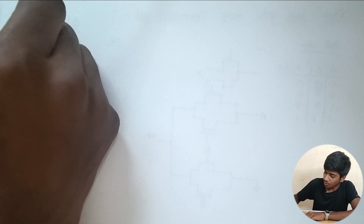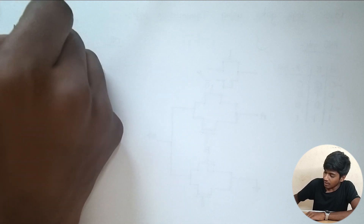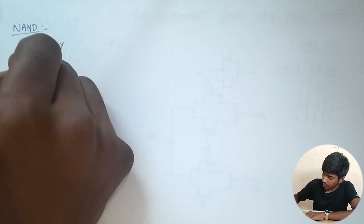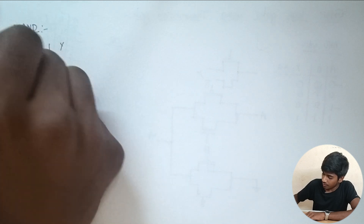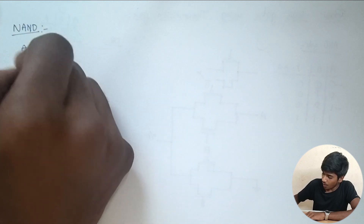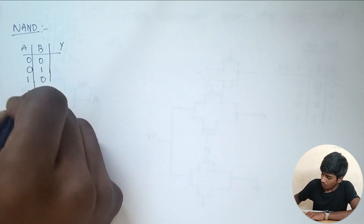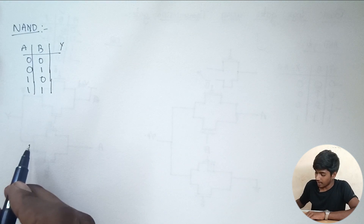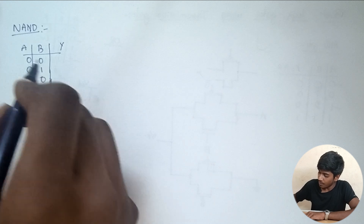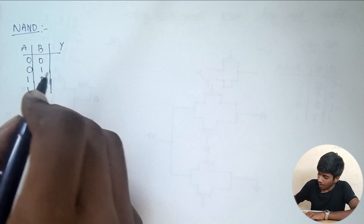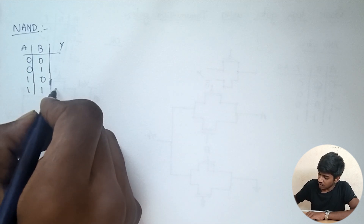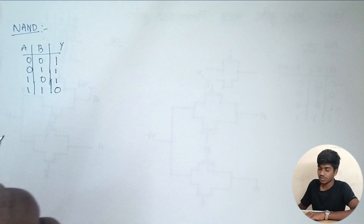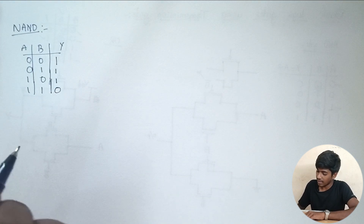Now for NAND and NOR gate, we will implement using transmission gate. NAND gate truth table: A, B, and output — 0,0 gives 1; 0,1 gives 1; 1,0 gives 1; 1,1 gives 0. When both inputs are 1, output is 0. Remaining cases output is 1. This is quite opposite to the AND gate.